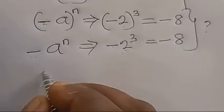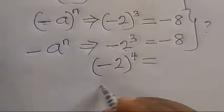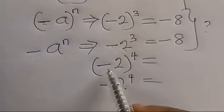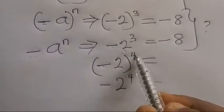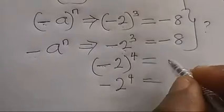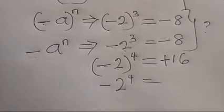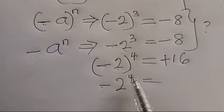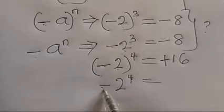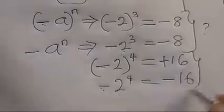Now compare (−2)⁴ versus −2⁴. For (−2)⁴: negative raised to an even number becomes positive, and 2⁴ = 16, so the answer is +16. For −2⁴: the 4 has no effect on the negative sign, so we get −16. You can see the results are different.